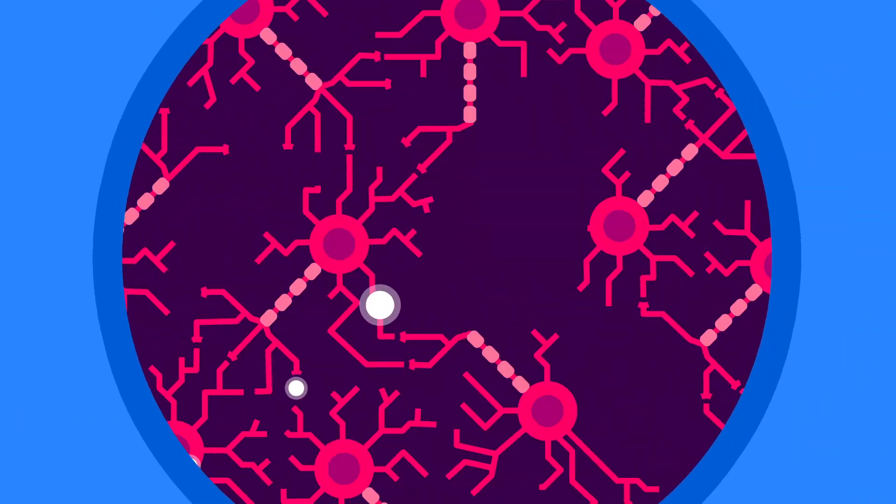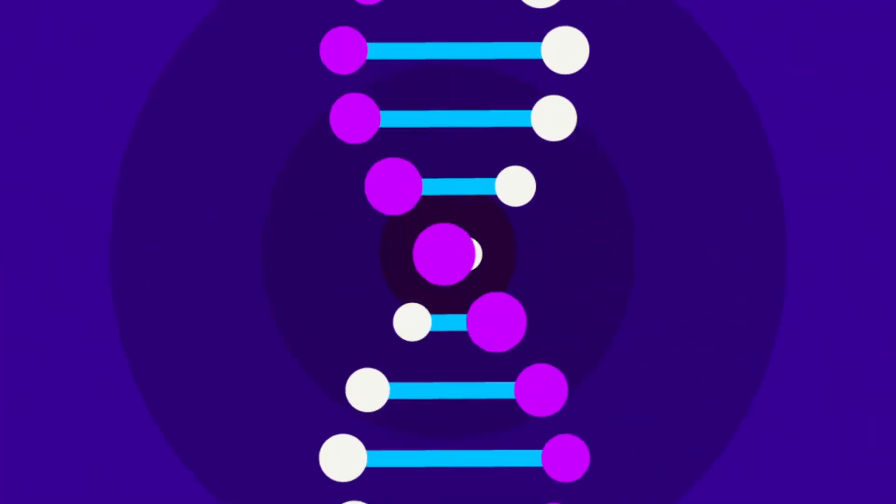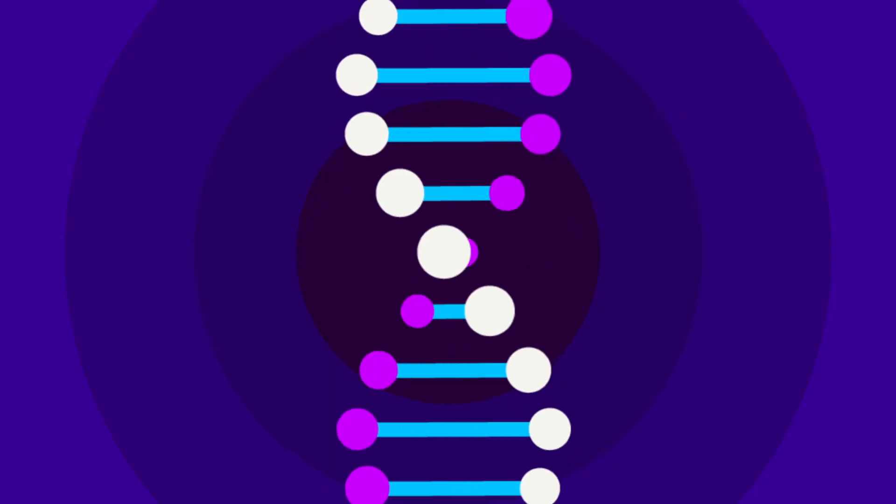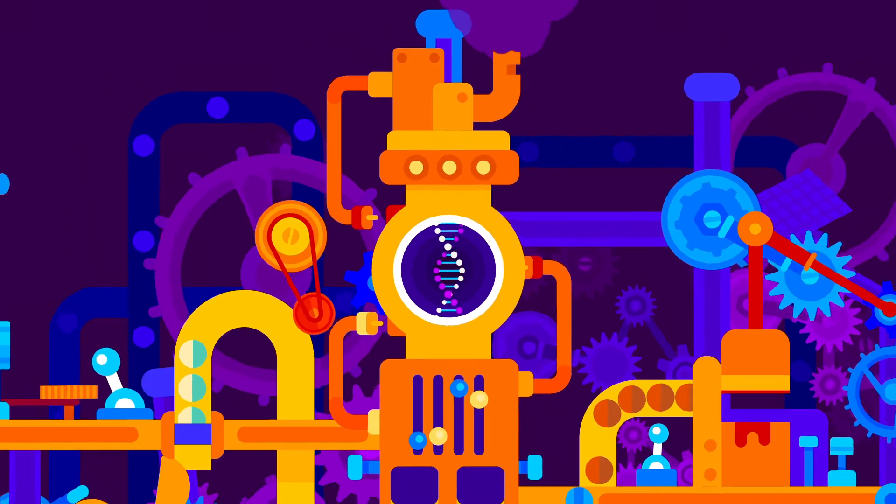And while we learn, brain connections are constantly being formed and modified. Many factors influence this process. In the beginning, our genes play the most important role for assembling the structures in the brain.